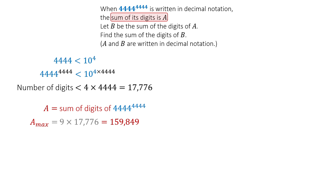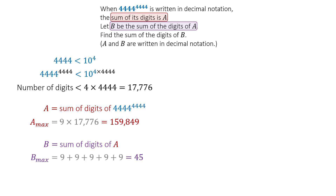But we're not done. Next, we need the sum of the digits of A, which is denoted as B. The largest possible value of the sum of the digits of 159,984 is, at worst, 9 plus 9 plus 9 plus 9 plus 9, which equals 45. This is the theoretical maximum of B. But when we take it a step further and find the sum of the digits of B, the maximum value is only 3 plus 9, or 12.